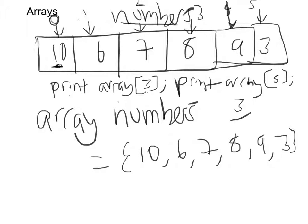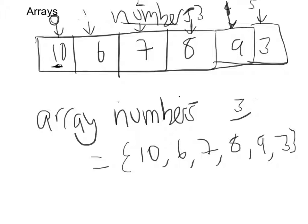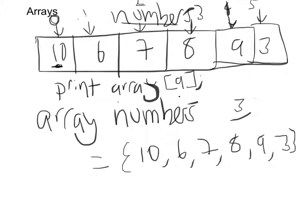What if you try to print array at position 9? Our array only has 6 elements, and the last position is index 5. We don't have a position 9, so the computer or compiler will throw an 'index out of bounds' error — meaning index 9 is out of bounds and there's no element at that position in our array.